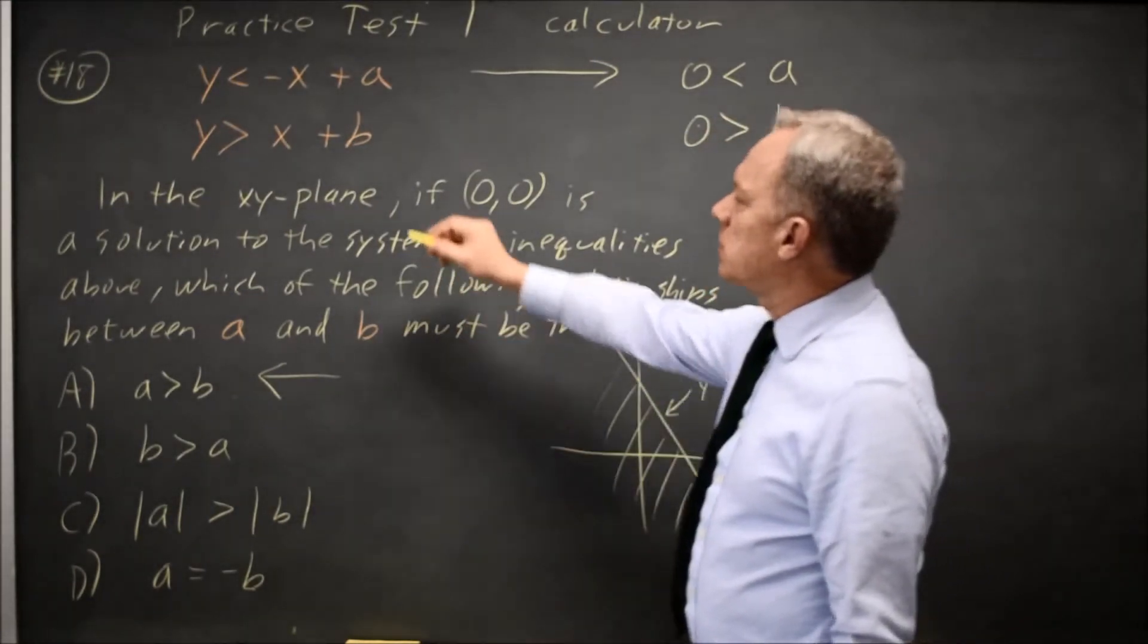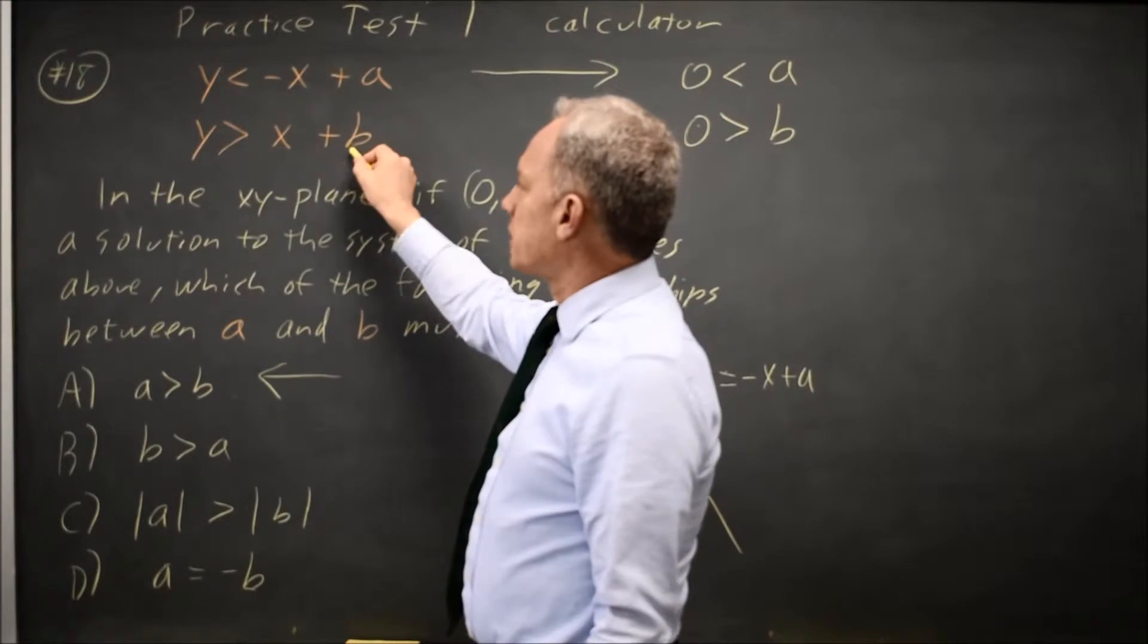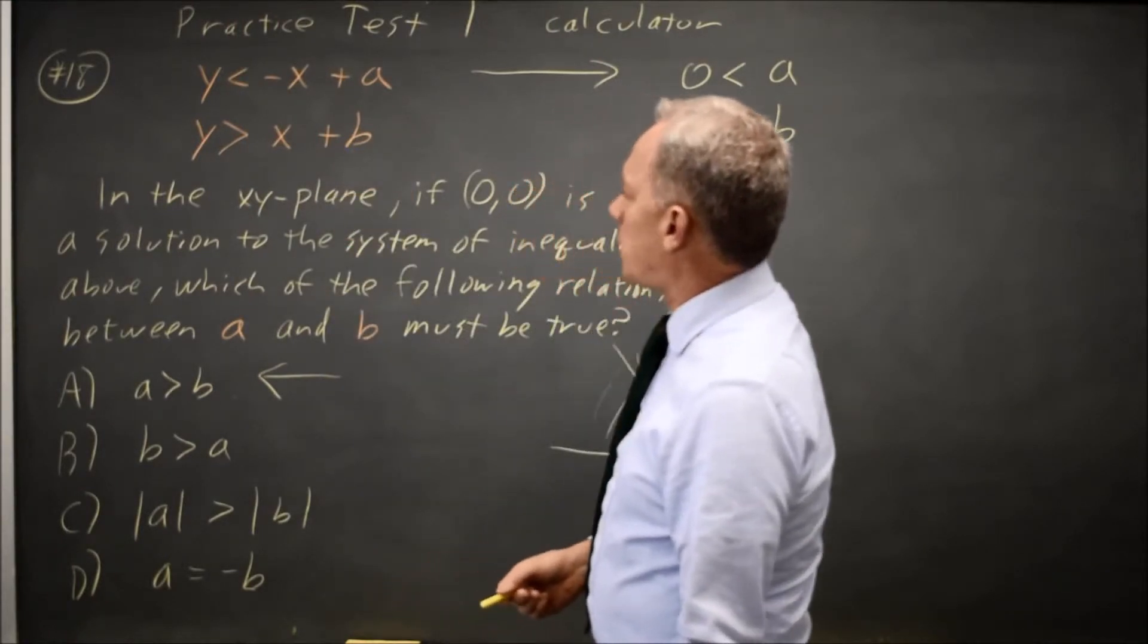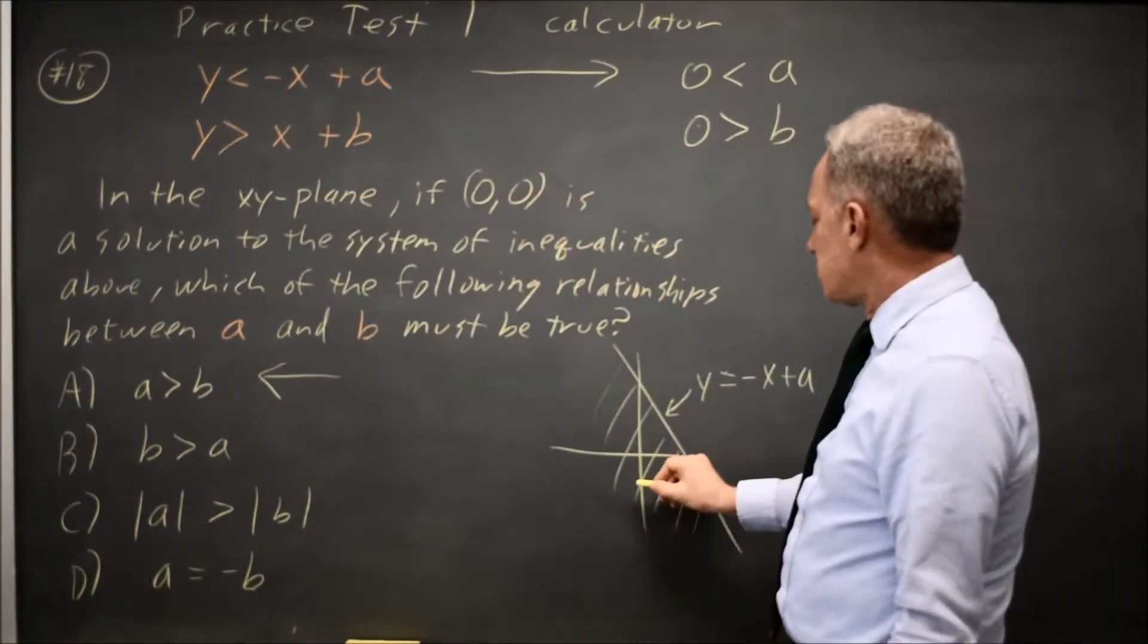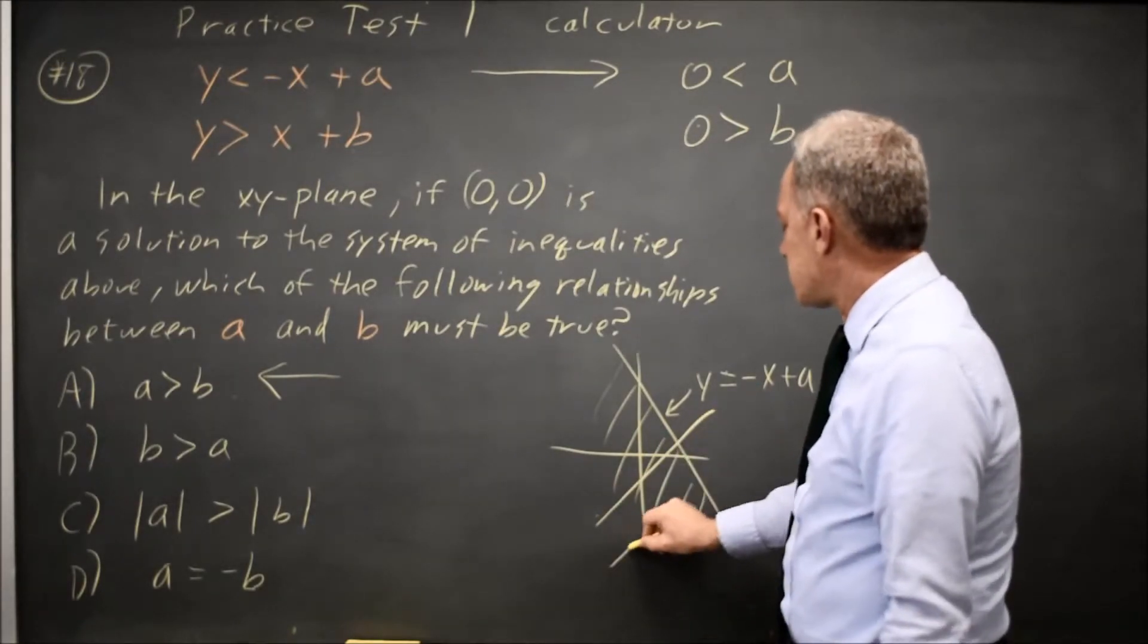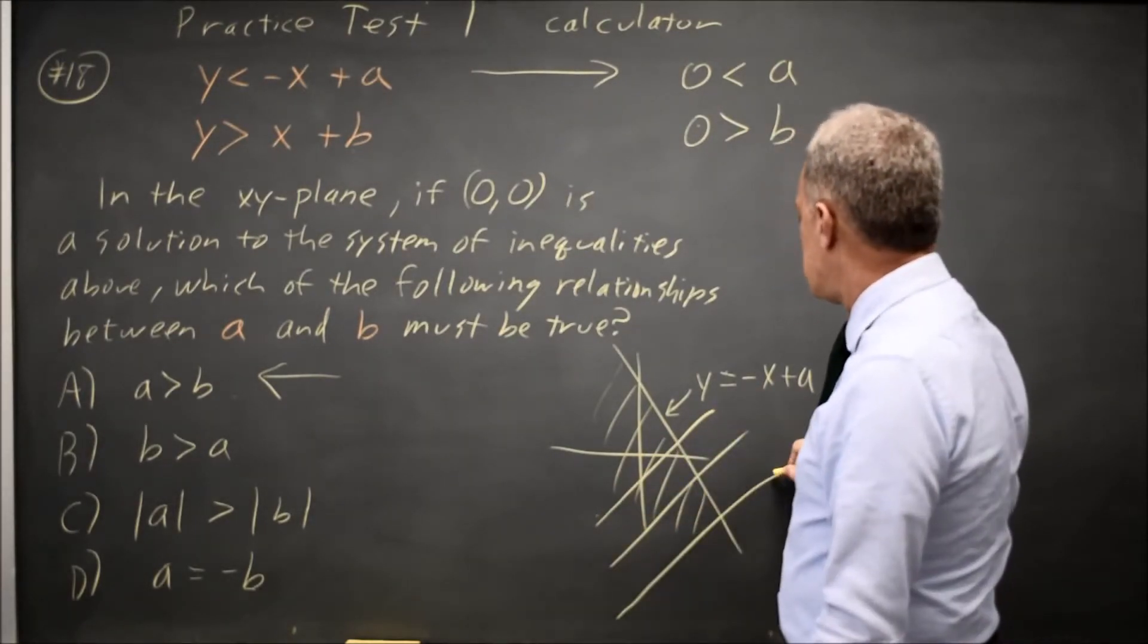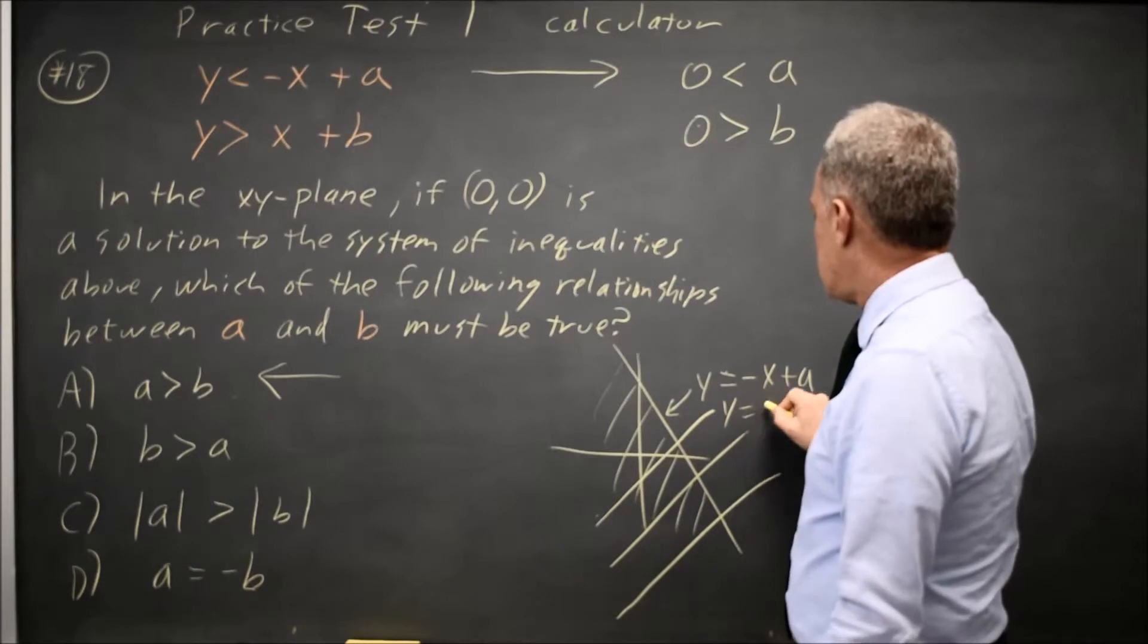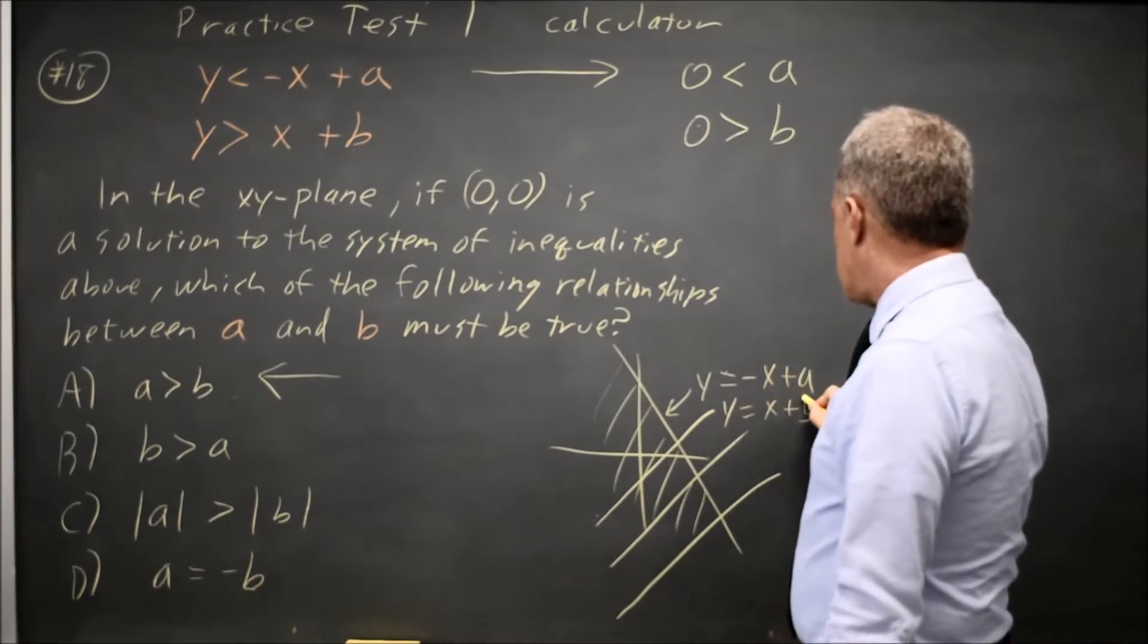The second one, if I graph y equals x plus B, the slope is positive 1, and if the origin is a solution, I have to go through the y-axis somewhere below the origin.